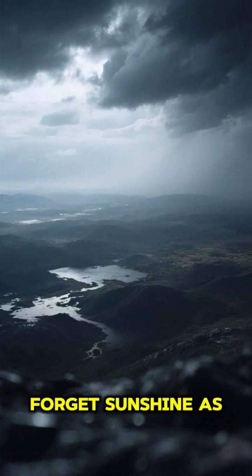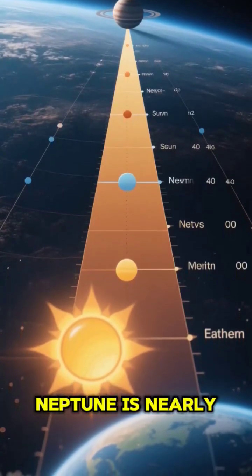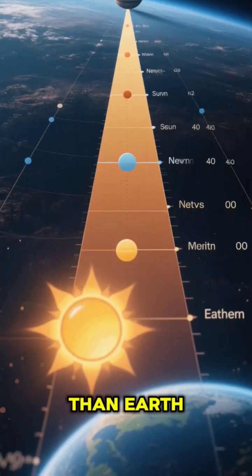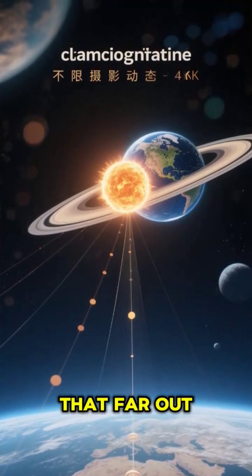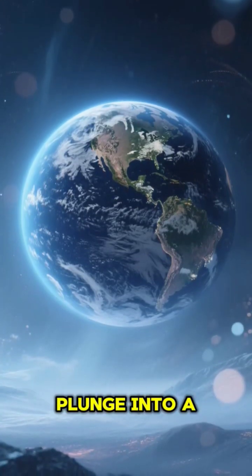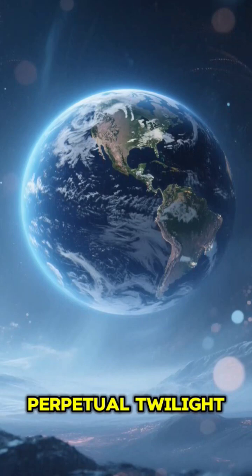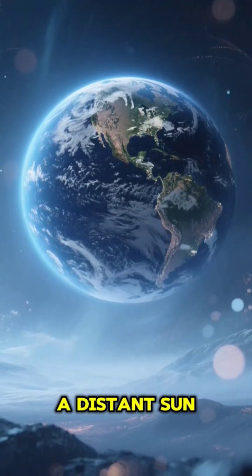First off, forget sunshine as you know it. Neptune is nearly 30 times further from the sun than Earth. If it were our closest neighbor, that means we'd also be that far out. Our planet would plunge into a deep, perpetual twilight, barely warmed by a distant sun.